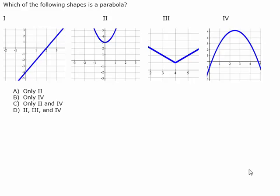Which of the following shapes would be a parabola? Go ahead and pause the video, work it out, and when you're ready to see the answer press play. The two examples that are parabolas would be number two and number four. Answer choice C — only number two and number four — are examples of parabolas. Again, they're a curved shape.